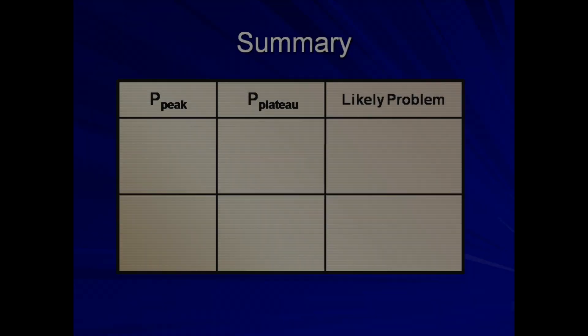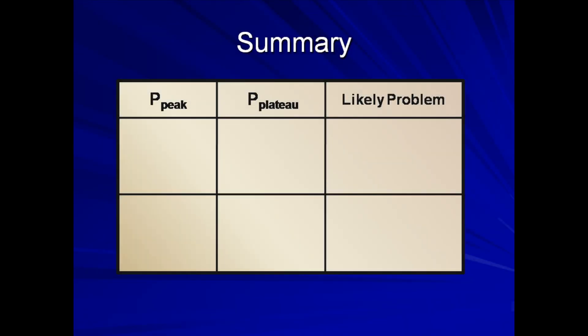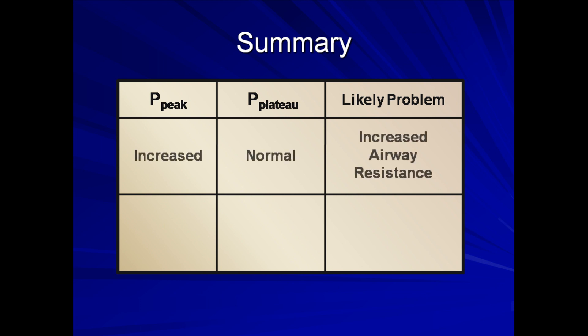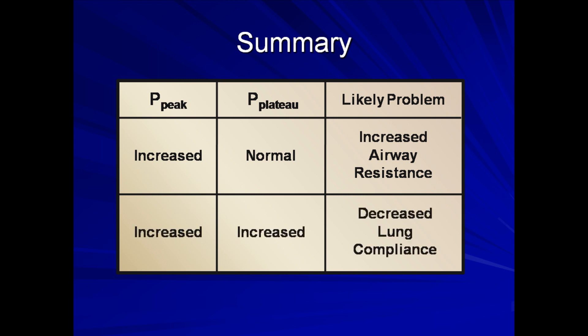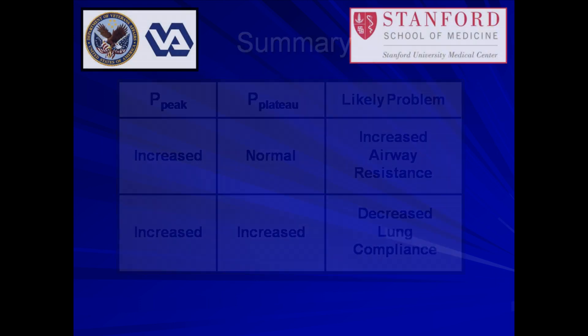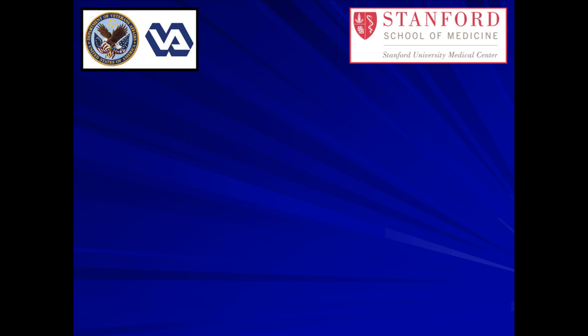In summary: when peak pressure is increased but plateau pressure is normal, it suggests that airway resistance is increased. When both peak pressure and plateau pressure are increased, it suggests that lung compliance is decreased. That's the end of this lecture on monitoring lung mechanics. Please continue on to the next lecture, which will discuss gas exchange.